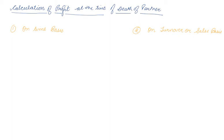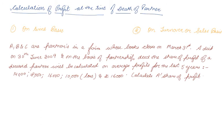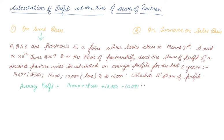Now let's do a numerical example so you will understand it clearly. A, B, and C are partners in a firm whose books close on March 31st. A died on 3rd June 2009, and on the basis of the partnership deed, the share of profits of the deceased partner will be calculated on the average profits for the last five years — that is, they are calculating it on the time basis method. The profits are: 14,000; 18,000; 16,000; loss of 10,000; and 16,000.